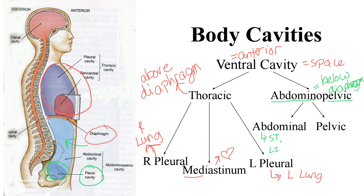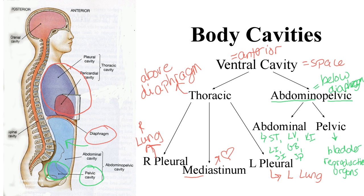In the abdominal cavity we're going to have things like our stomach, large intestine, small intestine, liver, gallbladder, spleen, and kidneys — all of those major organs. Down in the pelvic cavity, this is where we find the urinary bladder, which holds urine until you're ready to release it, as well as reproductive organs such as the uterus and ovaries. These are all divisions of the abdominal pelvic cavity, which is a portion of the ventral cavity.